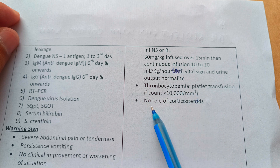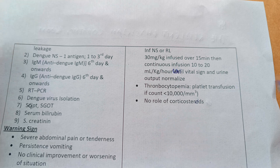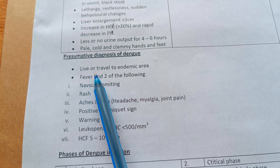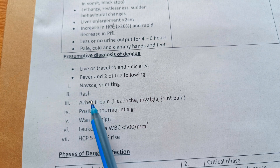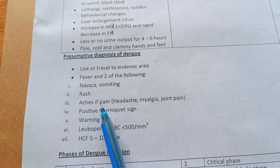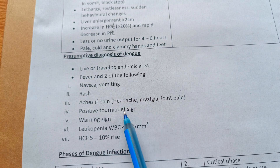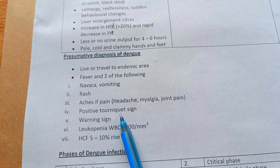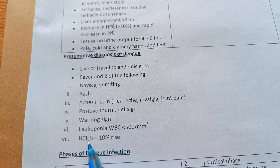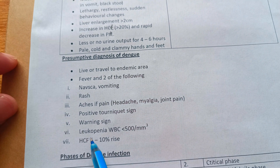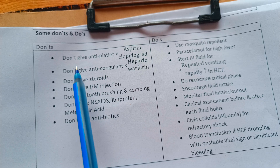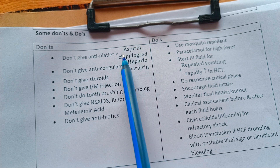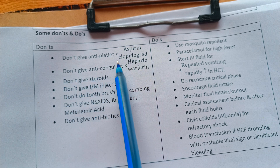Presumptive diagnosis of dengue fever: live or travel in endemic area, fever, plus two or more of the following — nausea, vomiting, rash, aches and pains, headache, myalgia, joint pain, positive tourniquet test, warning signs, leukopenia with WBC less than 5000, or HCT rise by 10%. Do not give antiplatelet agents such as aspirin or clopidogrel, do not give anticoagulants such as heparin.